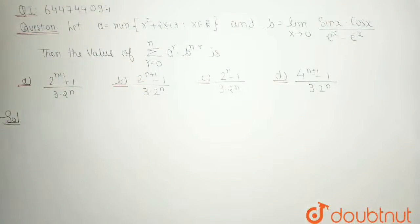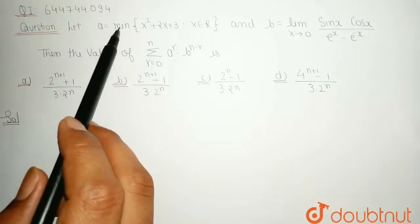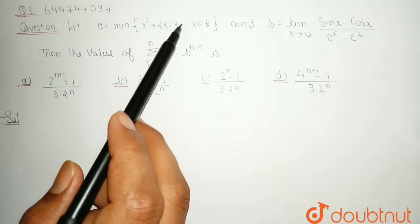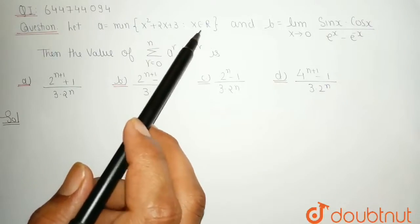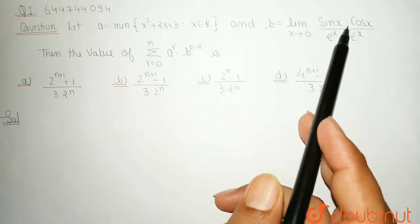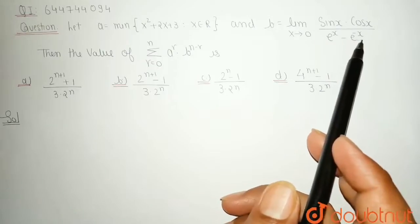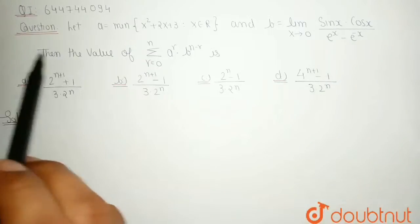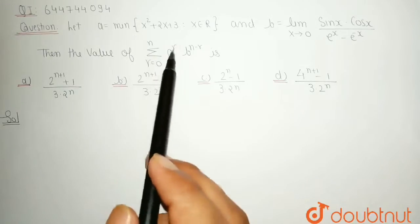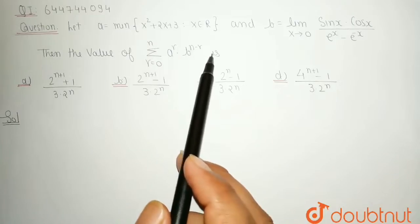Hello friends, welcome to Doubtnut. Our question is: let a be equal to the minimum of x² + 2x + 3 such that x belongs to real numbers, and b is equal to the limit as x tends to 0 of sin x · cos x divided by (e^x − e^(−x)). Then find the value of the summation r = 0 to n of a^r · b^(n−r).